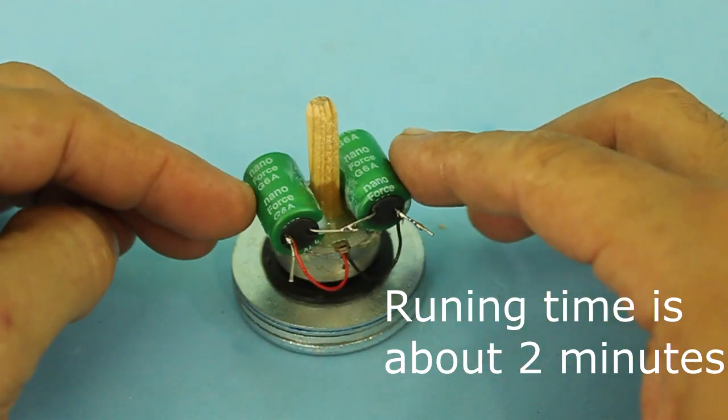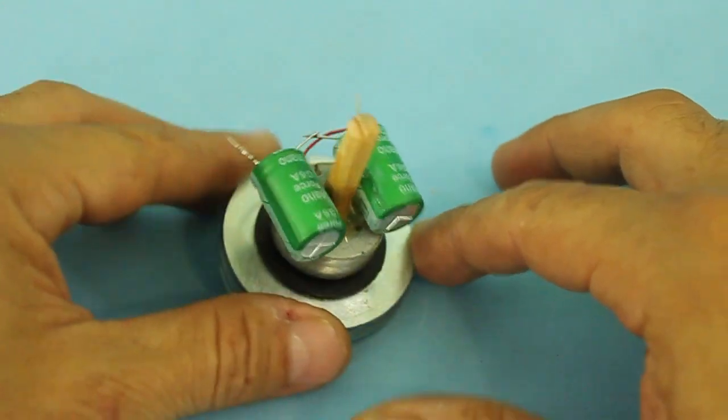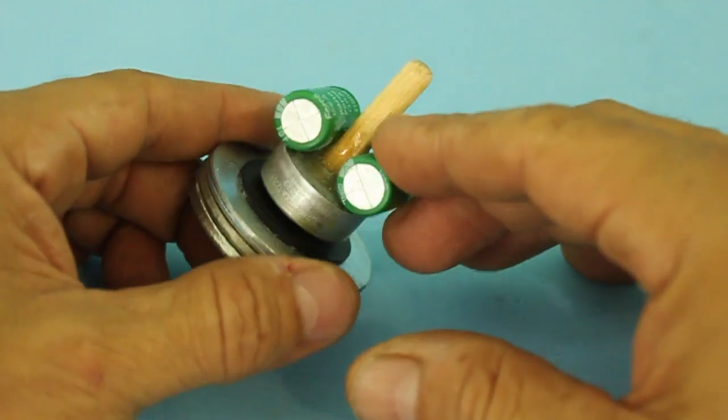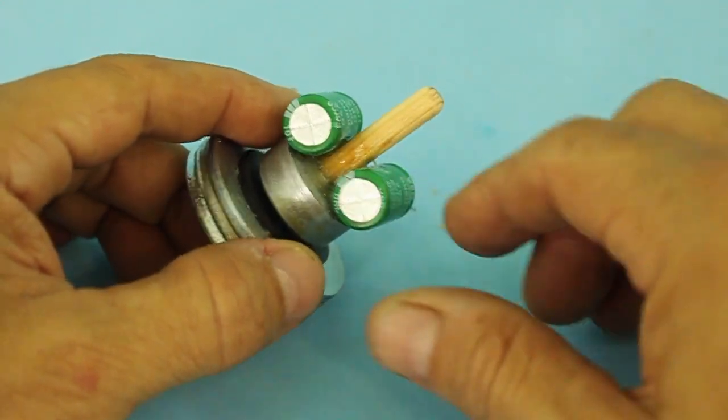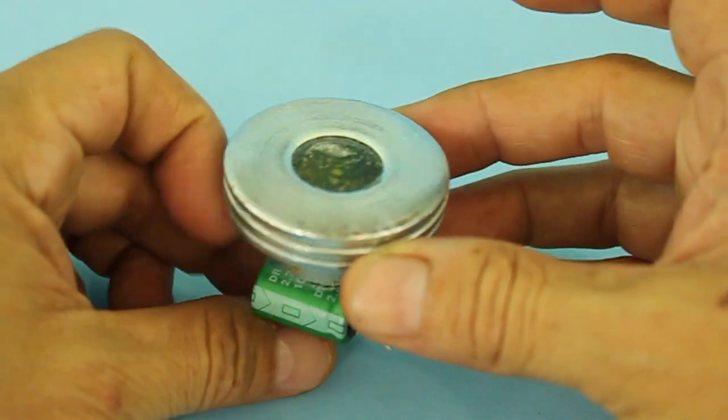So we have an equivalent capacitance of 5 farads at 5.4 volts and we have also this wooden axis that will be used to keep the device in position.